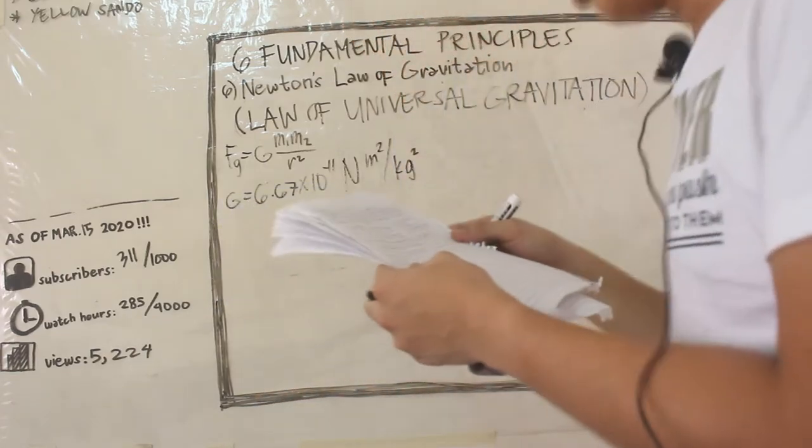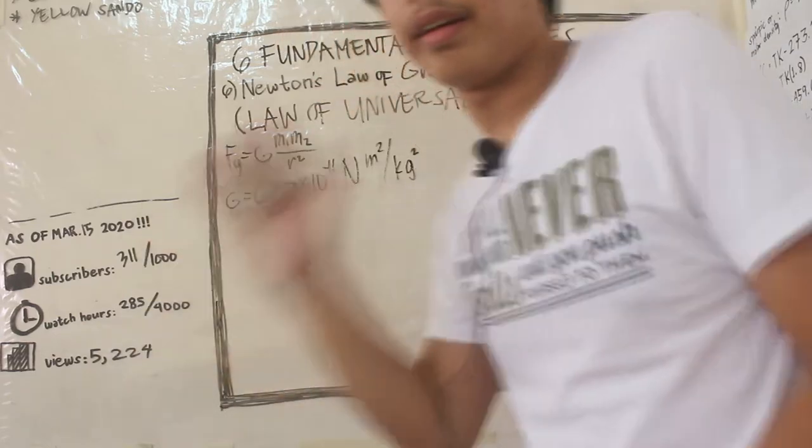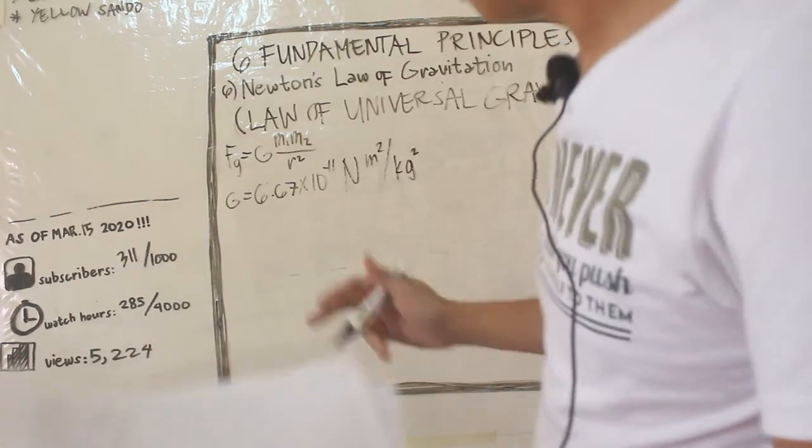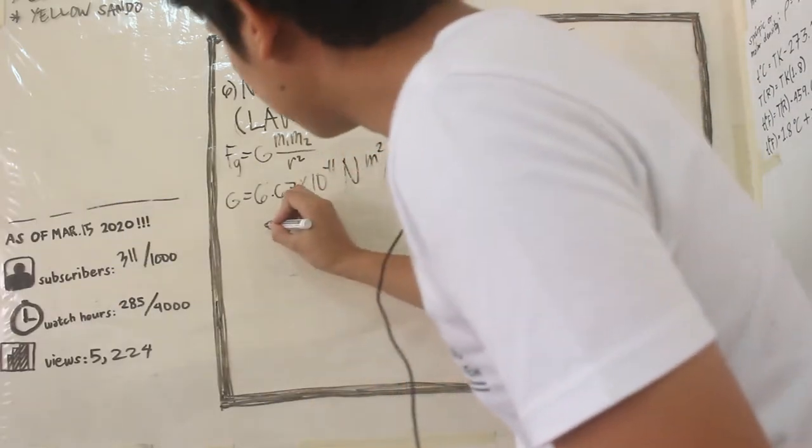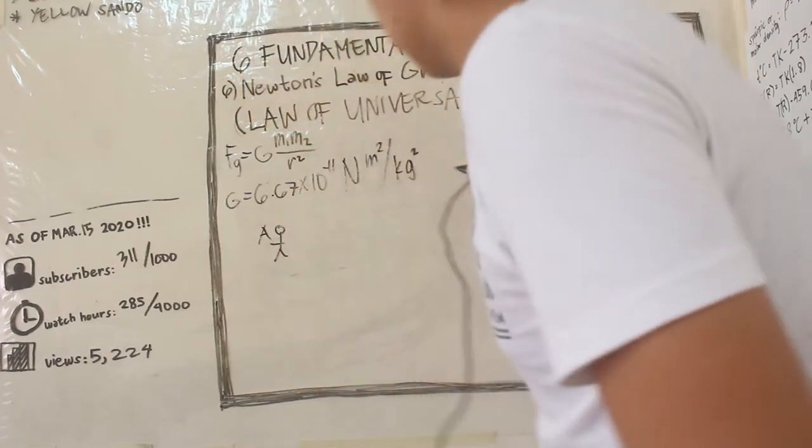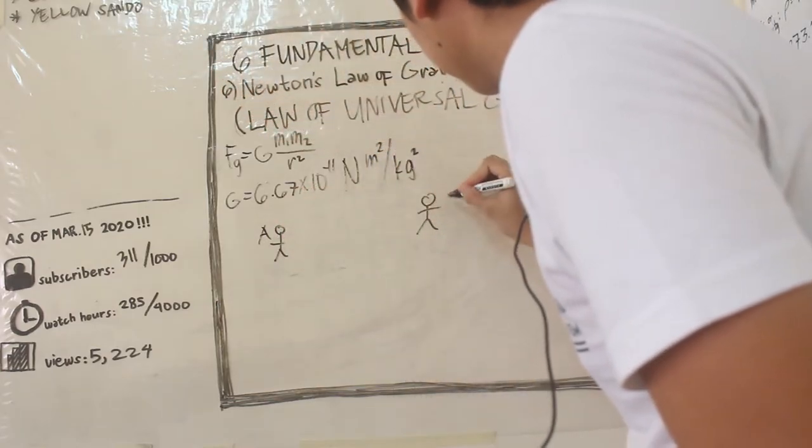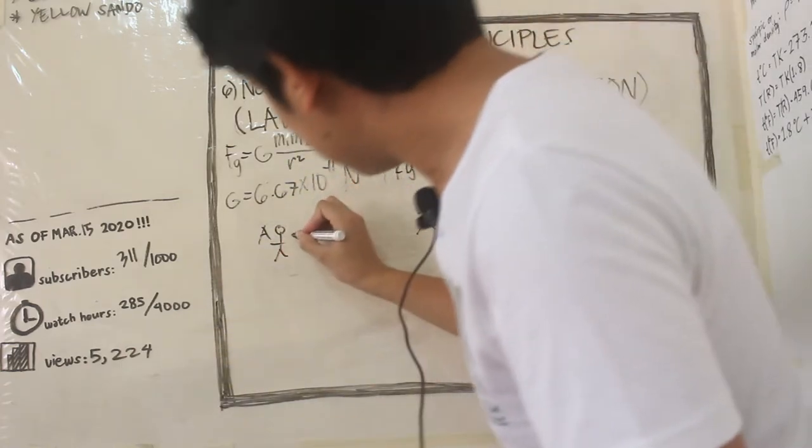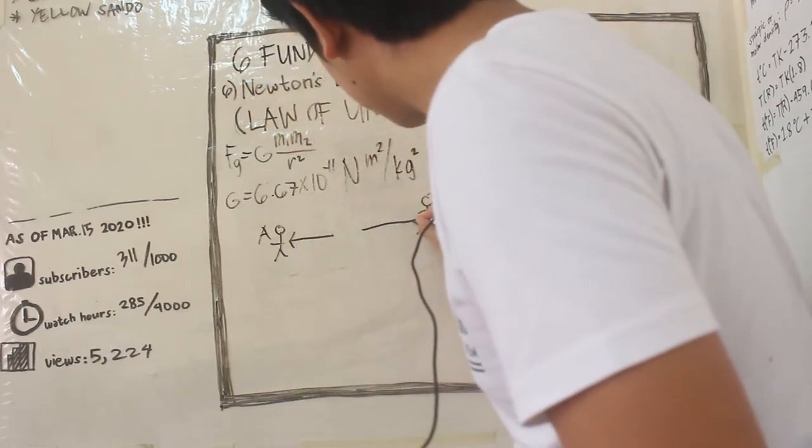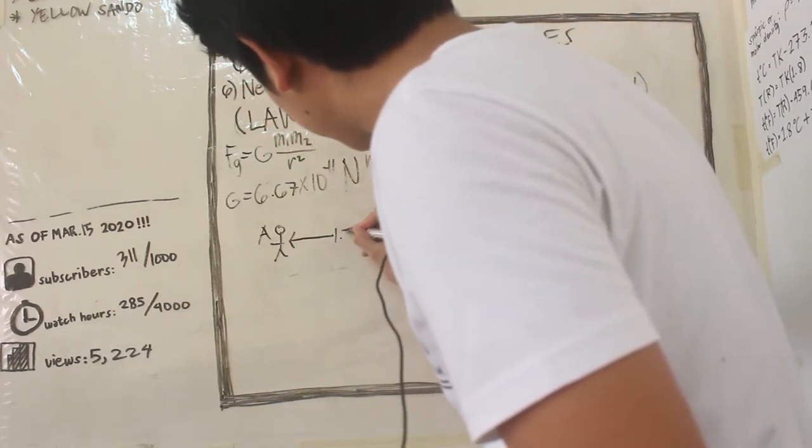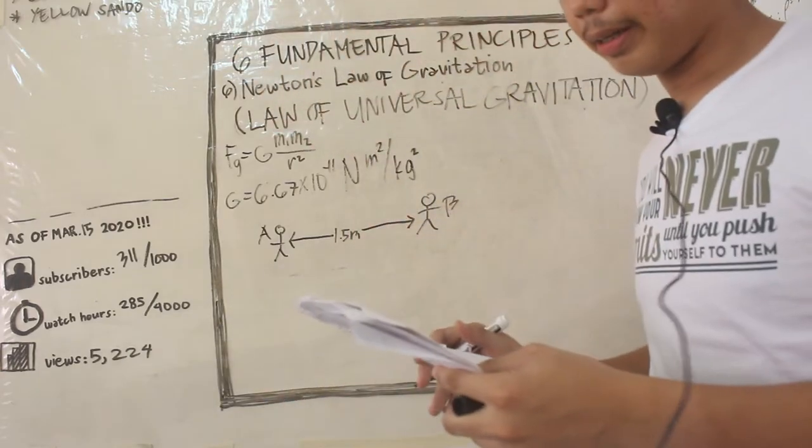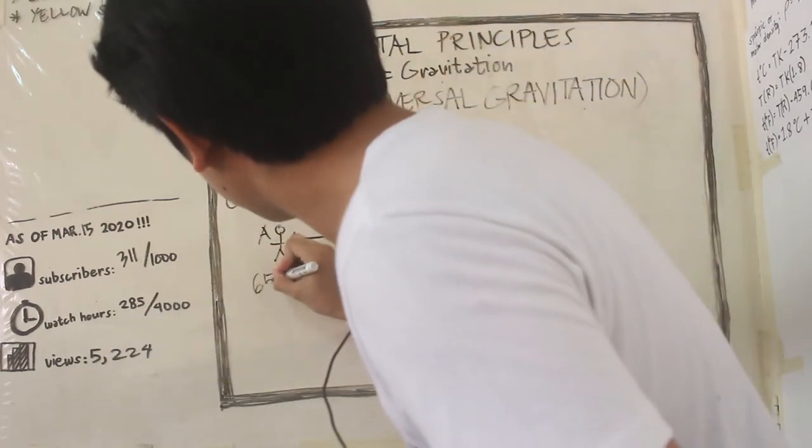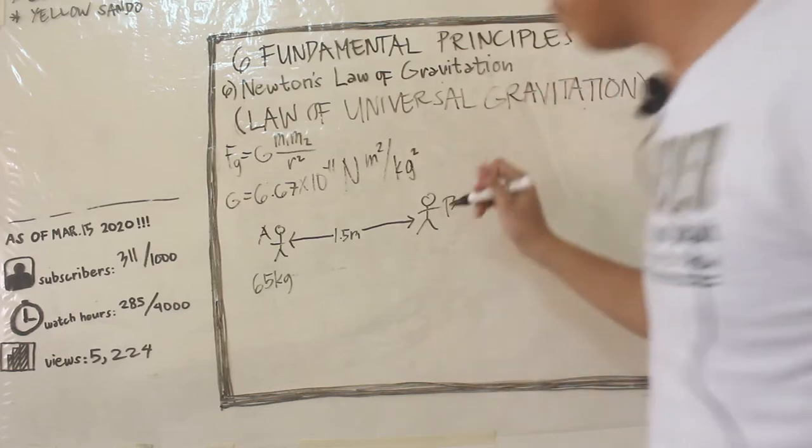Let's say for instance there are two people in a room - person A and person B. The distance between them is 1.5 meters. Person A weighs 65 kilograms, while person B weighs 80 kilograms.